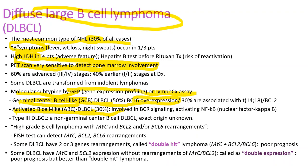The germinal center B cell-like subtype has BCL-6 overexpression, and the activated B cell-like subtype is involved in BCR signaling. FISH testing can detect MYC, BCL-2, or BCL-6 rearrangement. Some lymphoma cells have two or three gene rearrangements, like MYC plus BCL-2 or BCL-6 — those are called double-hit lymphoma and carry a poor prognosis. Some lymphoma cells have MYC and BCL-2 expression without gene rearrangements; those are called double-expression lymphoma, which also has a poor prognosis but still better than double-hit lymphoma.